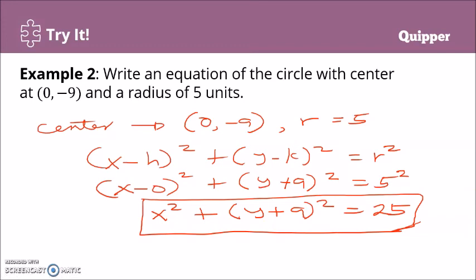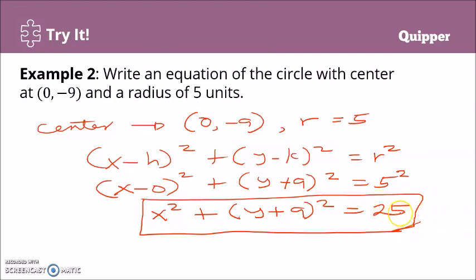When the equation is in standard form it's easy to identify the center and radius. In this example, since the equation is x² + (y + 9)² = 25, the h-coordinate is 0 and the y-coordinate of the center is −9, so the center is (0, −9). Just take the square root of 25 and you get the radius, which is five.